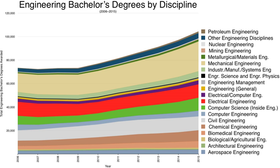In Germany, the term Ingenieur is legally protected and may only be used by graduates of a university degree programme in engineering. Such degrees are offered by universities, including Technische Hochschulen. Since the Bologna reforms, students receive a bachelor's degree after three to four years of studies, optionally followed by a master's degree. Prior to adopting the Bologna system, the first and only pre-doctorate degree received was the German Diplom-Ingenieur. The engineering doctorate is the Doktor-Ingenieur.